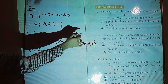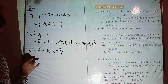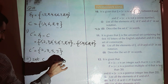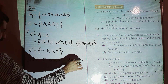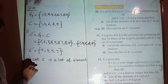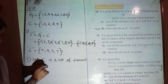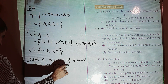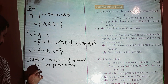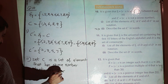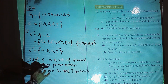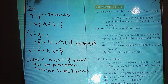Then they have asked in part number 2: describe the set C complement in words. C complement contains the elements 2, 3, 5, 7 — they are prime numbers. So C complement is a set of prime numbers between 2 and 7 inclusive. That is how you can define it.